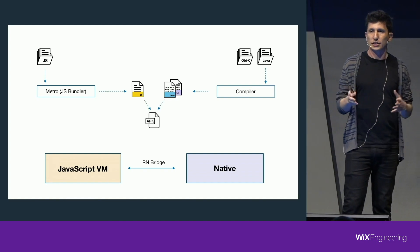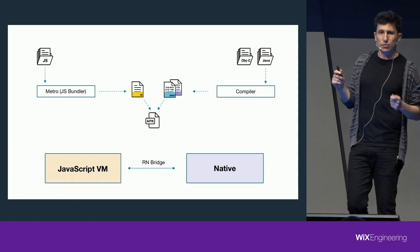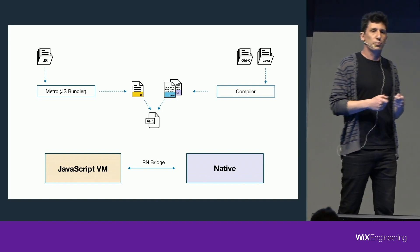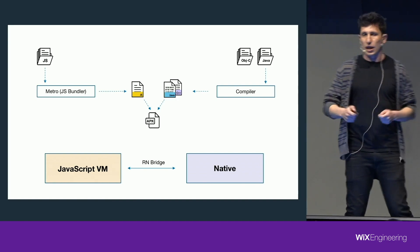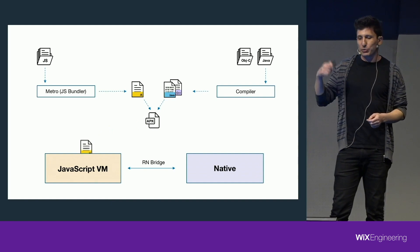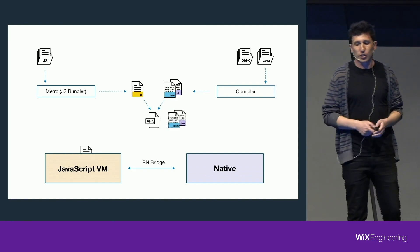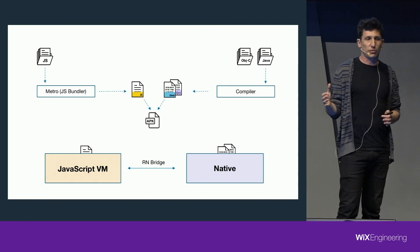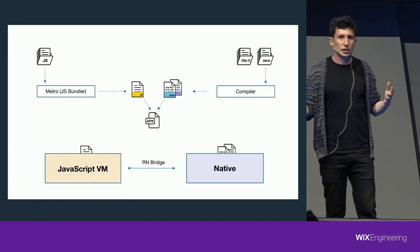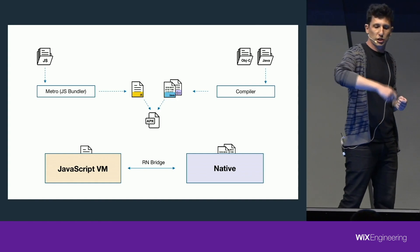All of this is packed inside the APK, the executable file on Android. In this talk, I will mostly talk about Android because it's more interesting and there are more performance problems on Android — and I'm coming from Android, so it's easy for me. When we install and run the application, the JavaScript part will run on the JavaScript virtual machine, and the native code will run on the native part of the OS like any normal native application. Between these two parts, there is a React Native bridge, which is responsible for passing messages between the two sides.